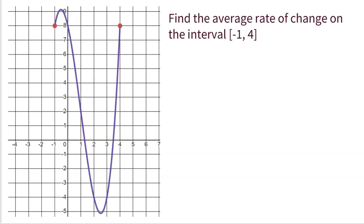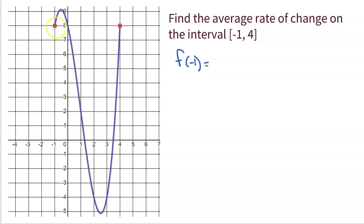Here is a pretty cool looking purple function. Let's say we want to find the average rate of change from the beginning to the end. This function is given on a closed interval from negative one to four, so we're only looking at this function in that closed interval. There might be more to the function, but we're only looking at this window from negative one to four. So how do we find the average rate of change from negative one to four? First, we need to find the outputs. What is the output for negative one? The beautiful thing about a graph is you can just look — the output for negative one is eight. What is the output at the end of the graph, at four? Look at the graph — it looks like it's also eight.